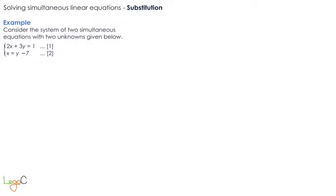In this example, we have a system of two simultaneous equations with two unknowns, x and y. The first equation is 2x plus 3y equals 1, and the second equation is x equals y minus 7.